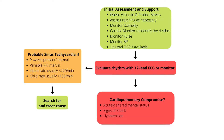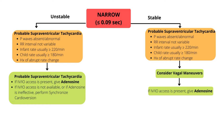As soon as we recognize a tachycardia arrhythmia in an infant or child, assess and look for signs of cardiopulmonary compromise. Signs of cardiopulmonary compromise include acutely altered mental status, signs of shock, hypotension, or life-threatening hemodynamic instability. If there are signs of cardiopulmonary compromise, evaluate the QRS duration.